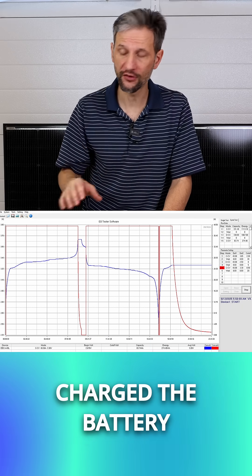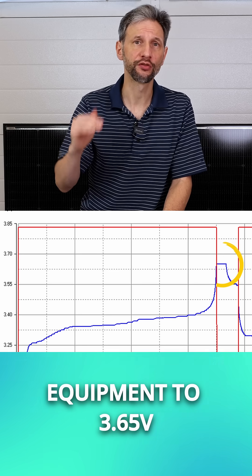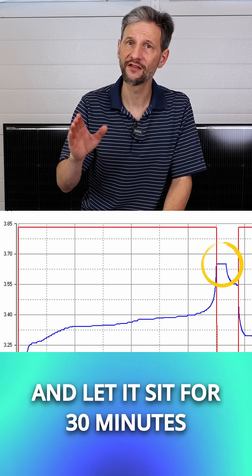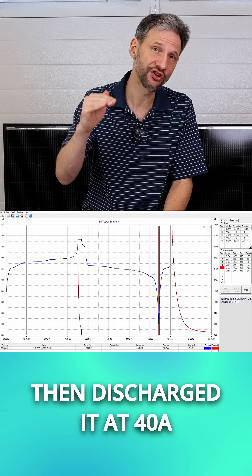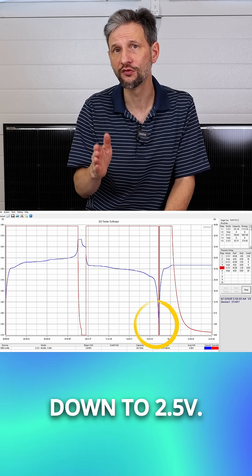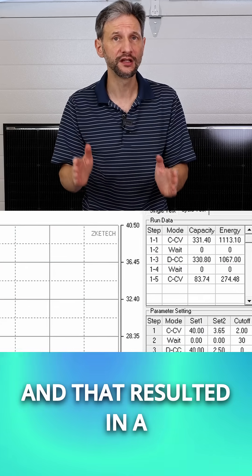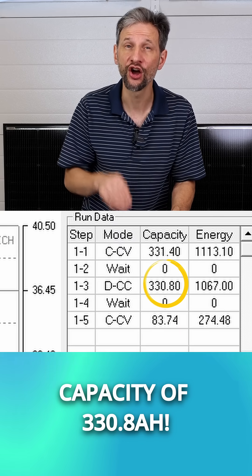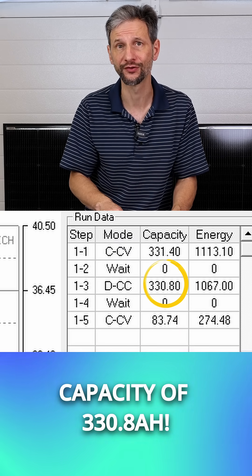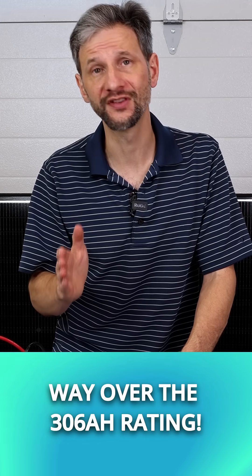You can see from this chart, I charged the battery with my testing equipment to 3.65 volts and let it sit for 30 minutes, then discharged it at 40 amps down to 2.5 volts. That resulted in a capacity of 330.8 amp hours, way over the 306 amp hour rating.